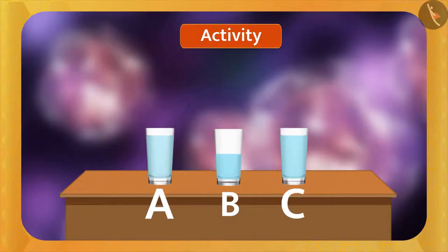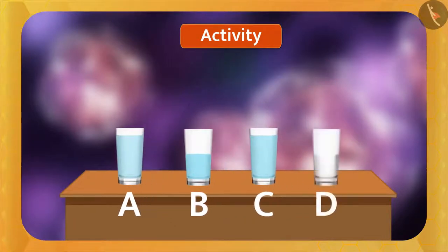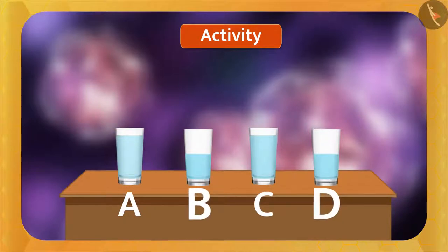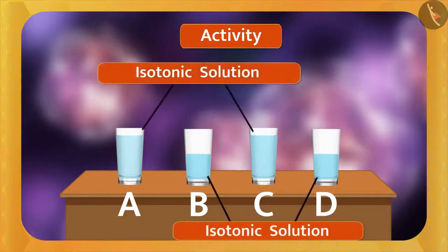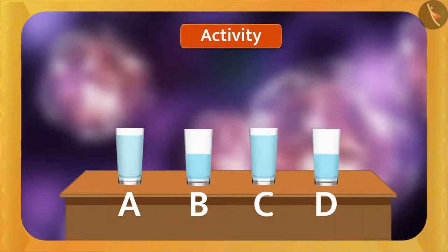Now take another glass C with the same amount of water and sugar or salt as glass A. Comparing glasses A and C, the concentration of water in both is the same, so both solutions are called isotonic solutions to each other. Similarly, glass D is prepared with the same composition as glass B, and glasses B and D are also isotonic to each other.